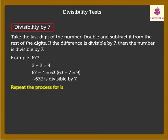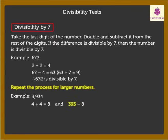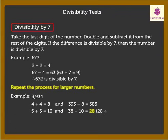Repeat the process for larger numbers. For example, let us take the larger number 3,934. Double the last digit 4 to get 8 and subtract it from 393, which gives 385. Now again, double 5 to get 10 and subtract it from 38, which is equal to 28. We know that 28 is divisible by 7. So, the number 3,934 is divisible by 7.